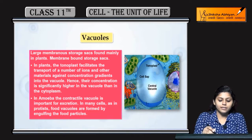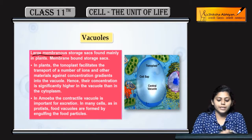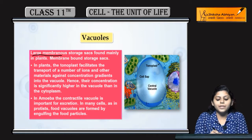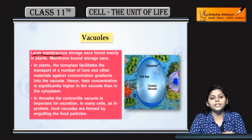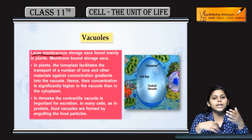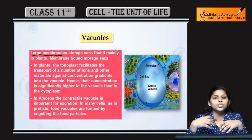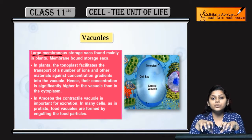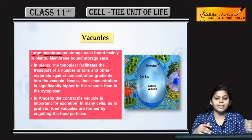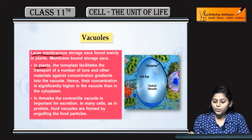Next topic is vacuoles. Vacuoles kya hoti hain — large membranous storage sacks hoti hain. Storage sack means store karthay hain koi food material ho saktay hain, ya koi ions ho saktay hain, ya minerals ho saktay hain, water ho saktay hain. Vacuoles storage sacks ki tarah act karthay hain. Mainly present hota hai in plants.